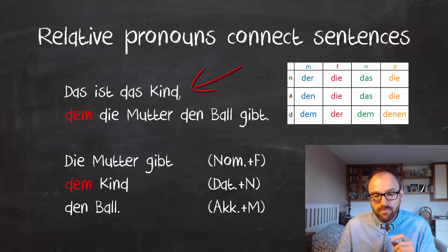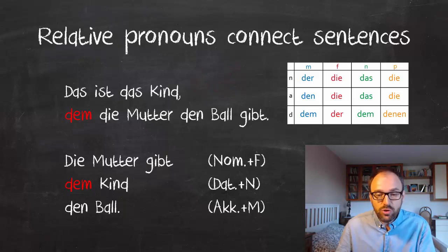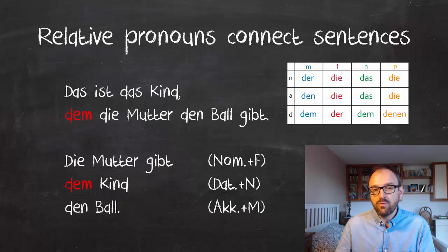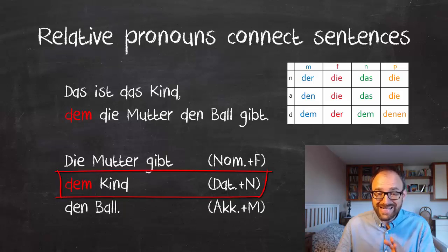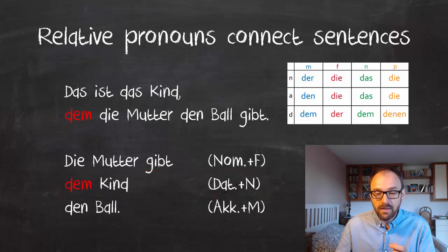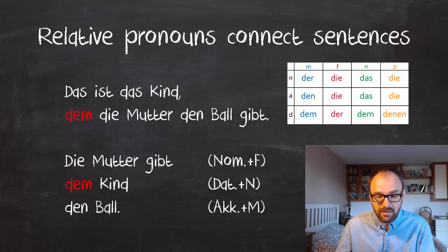Now let's play with the focus of the sentence. This time we're not talking about the mother, but the child: 'Das ist das Kind, dem die Mutter den Ball gibt' — that's the child to whom the mother gives the ball. Why 'dem'? Because first, the focus is the child — 'das Kind' — and that's neuter. And second, the child is in dative case because he or she is receiving the ball. So neuter and dative is 'dem': 'Das ist das Kind, dem die Mutter den Ball gibt.'